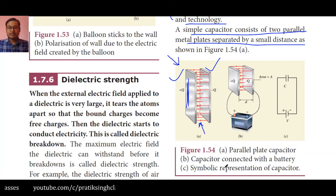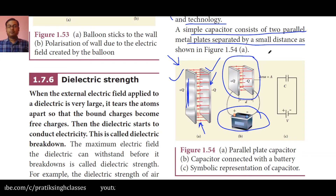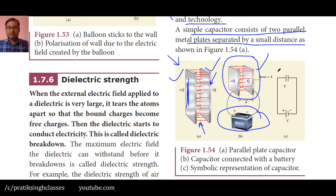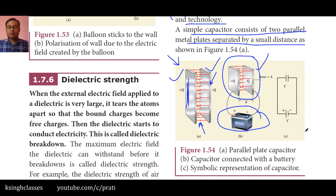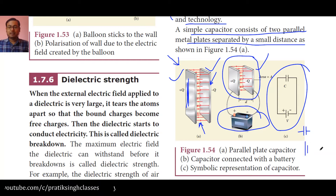In figure 1.54B, you can see that the capacitor is connected with a battery. Can you say what type of connection it is — parallel or series? Mention this in the comment section. In figure 1.54C, you can see the symbol of a capacitor connected with a battery. Note that two parallel lines of equal height represent a capacitor, whereas two parallel lines — one smaller and one bigger — represent a cell or battery.